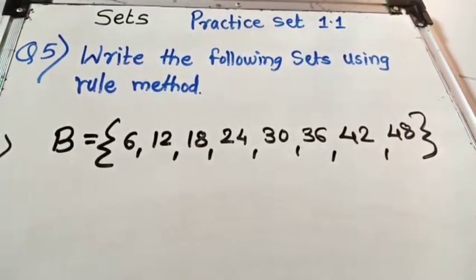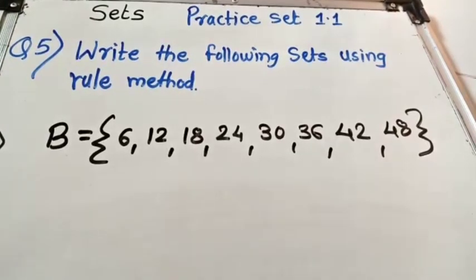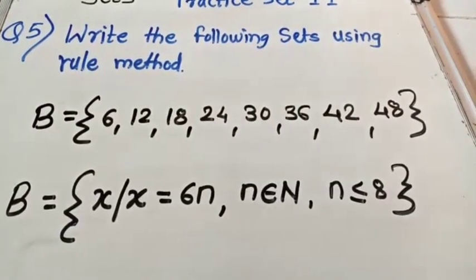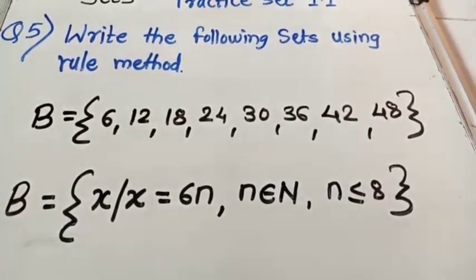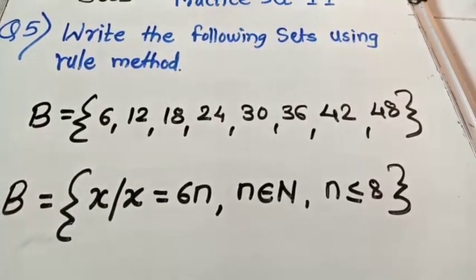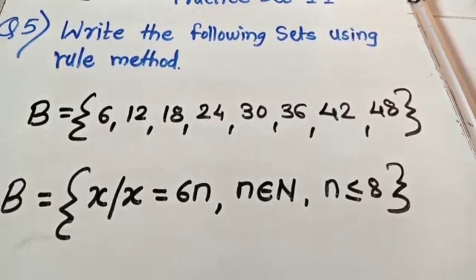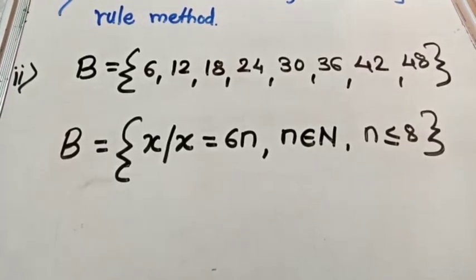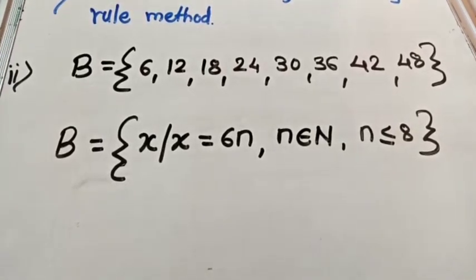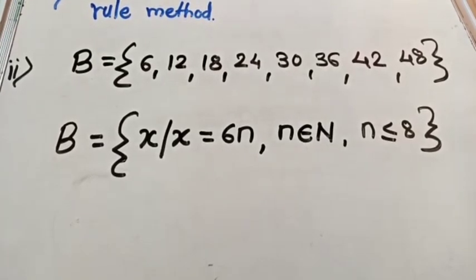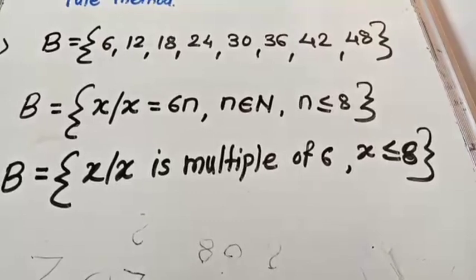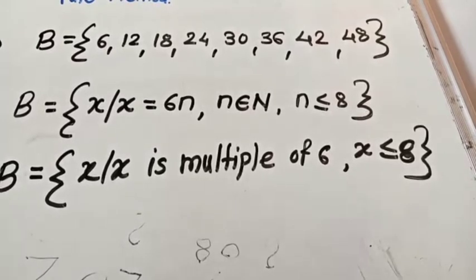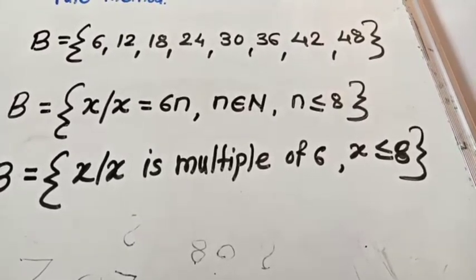Next example: B = {6, 12, 18, 24, 30, 36, 42, 48} — these are multiples of 6. In rule method: B = {x | x = 6n, n ∈ N, n ≤ 8}. Alternatively: B = {x | x is a multiple of 6, x ≤ 48}.